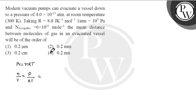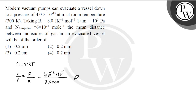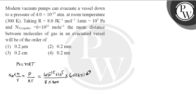Pressure is 4×10⁻¹⁵ atm, which equals 4×10⁻¹⁵ × 10⁵ Pascal, divided by R = 8, multiplied by temperature 300. This gives us the number of moles per unit volume. To convert to number of molecules, we multiply by Avogadro's number, 6.023×10²³.